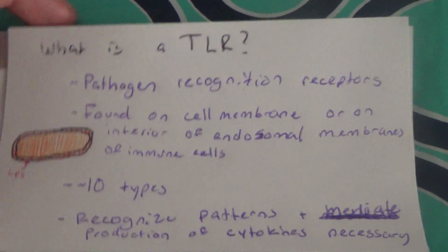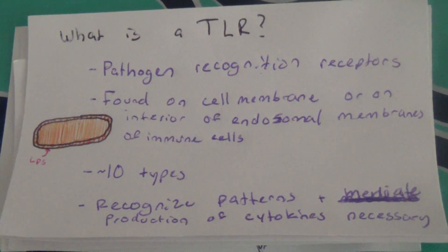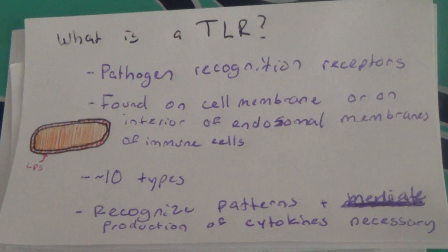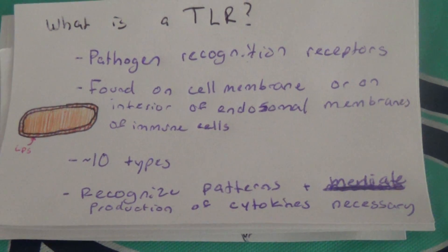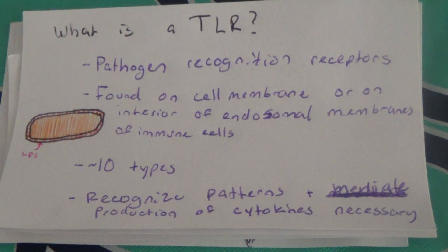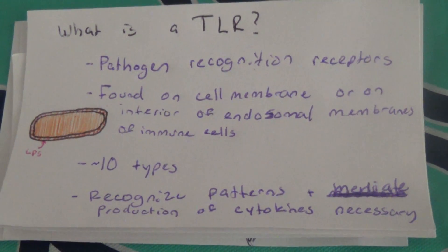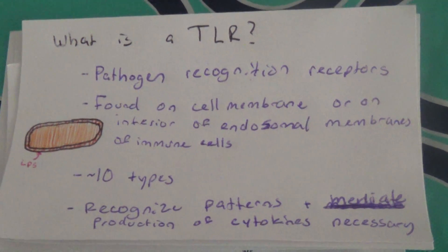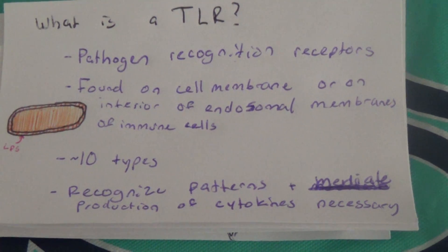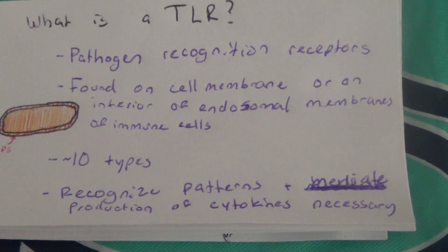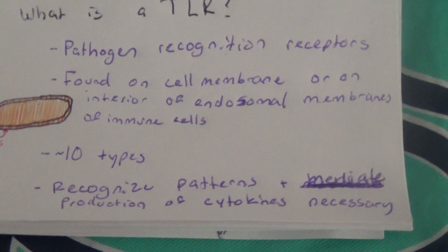So, basics of what is a TLR. TLRs are pathogen recognition receptors found on the cell membrane or the interior of endosomal membranes of immune cells. There are roughly 10 types of TLRs. What they do is they recognize patterns on pathogens and they mediate the production of cytokines necessary to promote an inflammatory response.